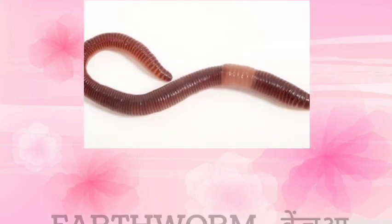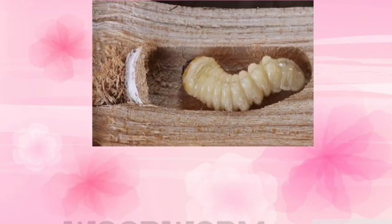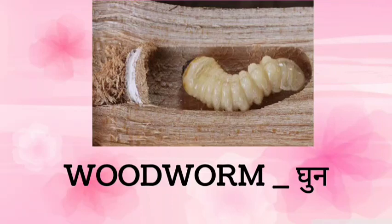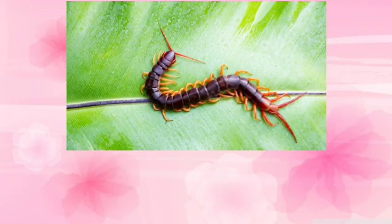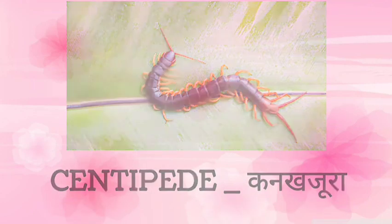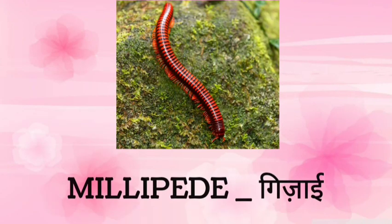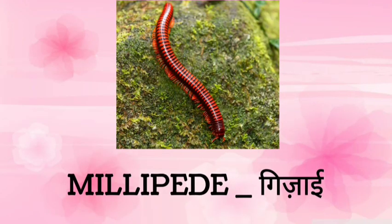Next is earthworm — earthworm means kechua. Next is centipede — centipede means kankajura. Millipede — millipede means gijai.